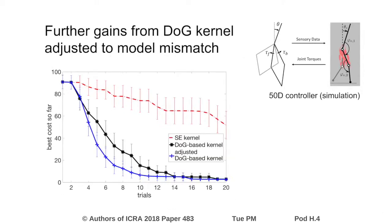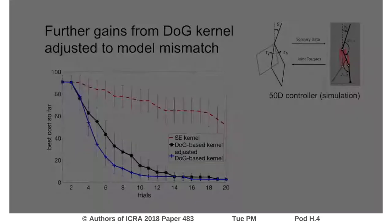To anticipate simulation-hardware mismatch, we also develop an adjusted version of the DOG kernel. This kernel incorporates a simple model of simulation-hardware mismatch. The model is learned and adjusted during optimization. We are working towards a hardware implementation to conduct hardware experiments in future work.